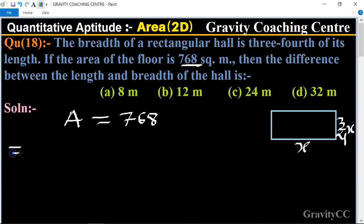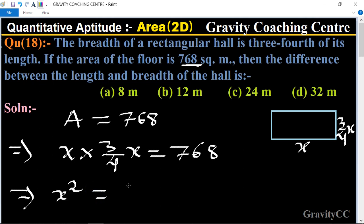We know that the formula for the area of a rectangle is length times breadth. So x × (3/4)x = 768. This implies that x² = 768 × (4/3). We can cancel by 3, giving us x² = 256 × 4.